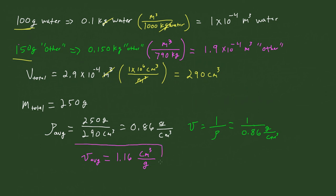So this is your answer. It's a little more involved — you have to do a whole bunch of converting — but the whole idea is that you can add the volumes and the masses to get an average density, and then from that calculate the specific volume. If you get a different answer, just make sure the units are the same and convert to check. Thanks for watching this video, and we will see you all in the next video.